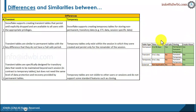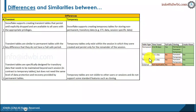Always try to remember this matrix, which gives you all the similarities and differences — not only between transient and temporary, but also permanent-transient, permanent-temporary, permanent-external, and all permutations and combinations. If you can remember this matrix, you could answer all kinds of questions in this area. Those are the differences.